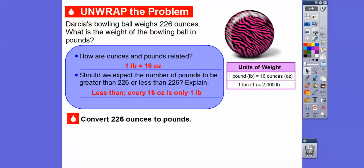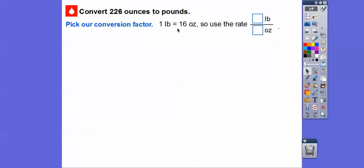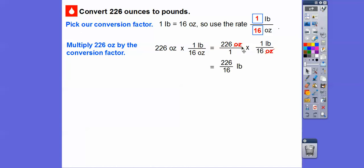We're going to convert 226 ounces to pounds. Remember, one pound equals 16 ounces, and since this is 226 ounces, we want the ounces to be on the bottom right here. We're going to put the 16 down here and the 1 up there. That way the ounces are going to cancel when we multiply. We'll multiply 226 oz by the conversion factor, one pound is 16 ounces. These ounces cancel, and we'll be left with the pounds right there.